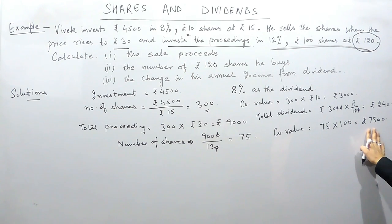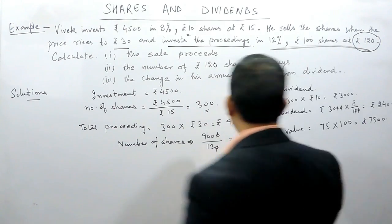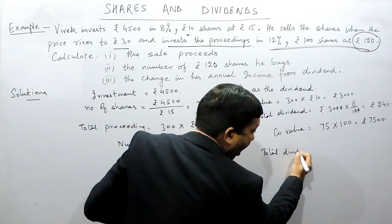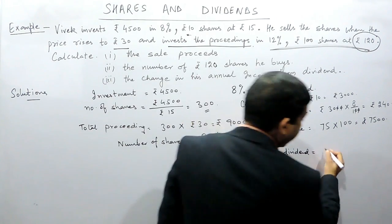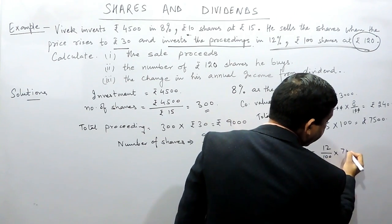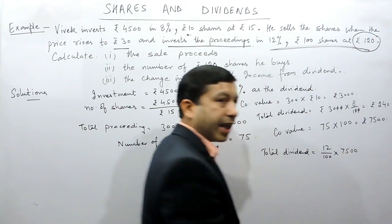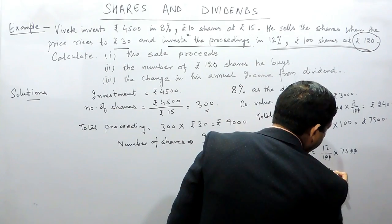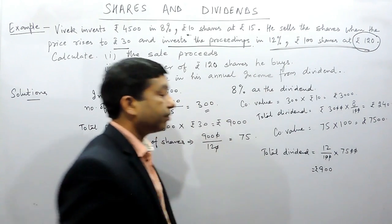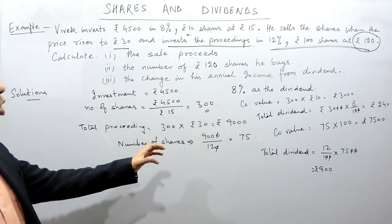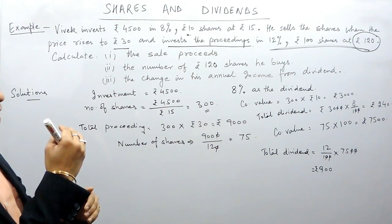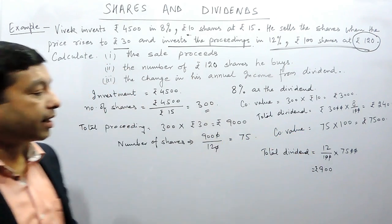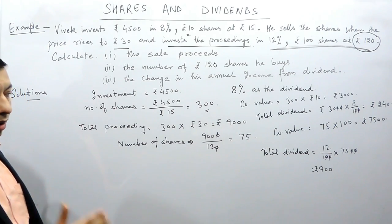On this company value of rupees 7500, he will get a dividend of 12%. So the total dividend Vivek is receiving now is 12% of rupees 7500, which comes out to be rupees 900. So the investment of rupees 9000, whose company value is rupees 7500, gives him a total dividend of rupees 900 as annual income.